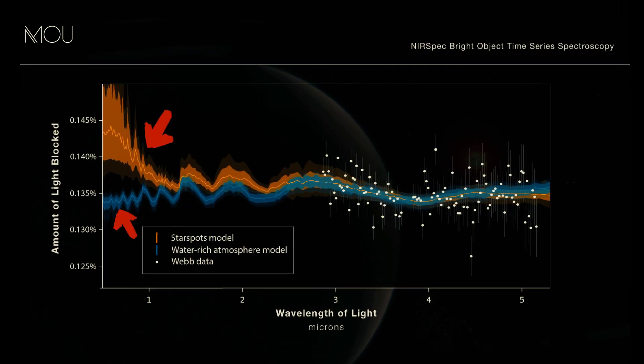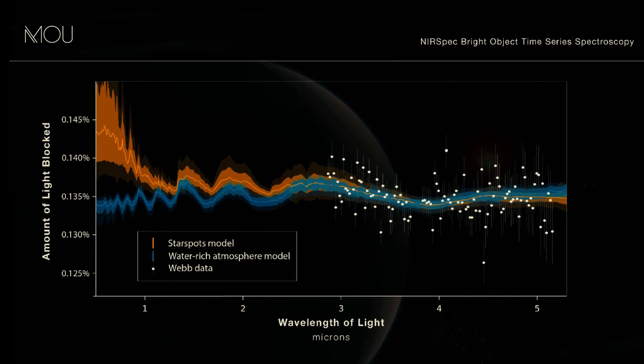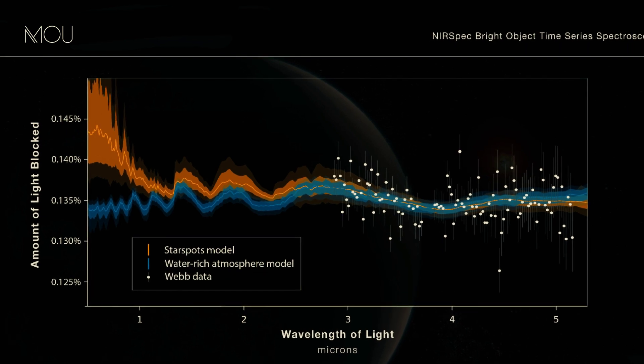The two models diverge notably at shorter infrared wavelengths, indicating that further observations with other Webb instruments will be necessary to pinpoint the source of the water signal.